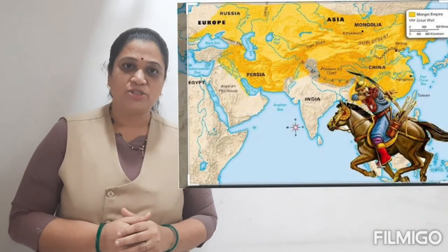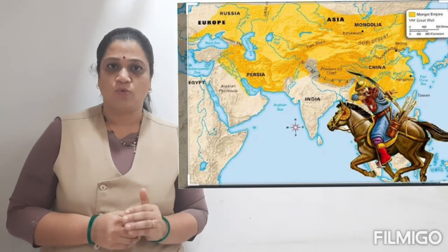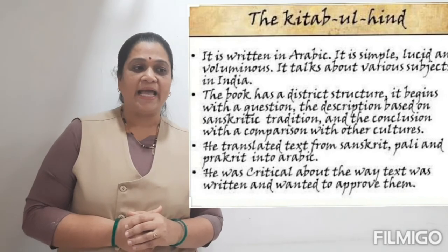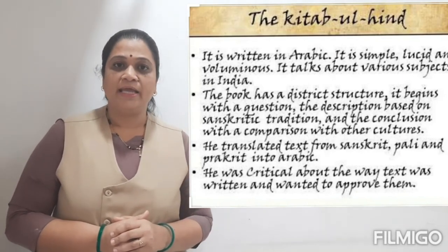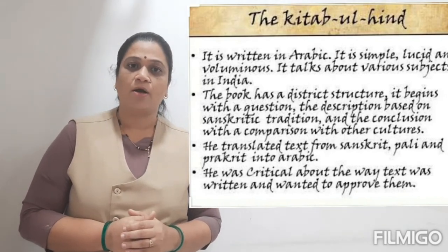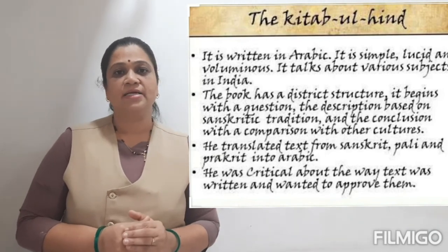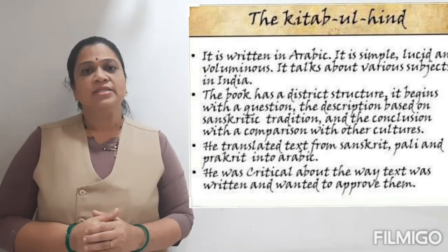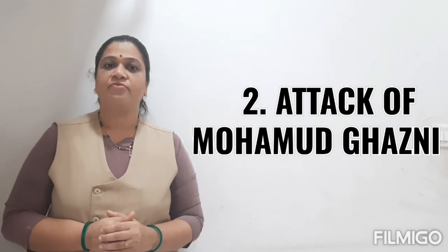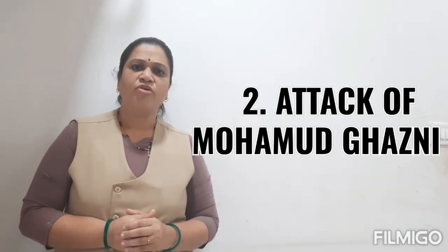Muhammad Ghazni entrusted a scholar named Al-Biruni to write an account of his victories — how he conquered different parts of the subcontinent. This Arabic work was known as Kitab-ul-Hind, and because of this written account we came to know about Muhammad Ghazni's victories. This was the second example of warfare for wealth.